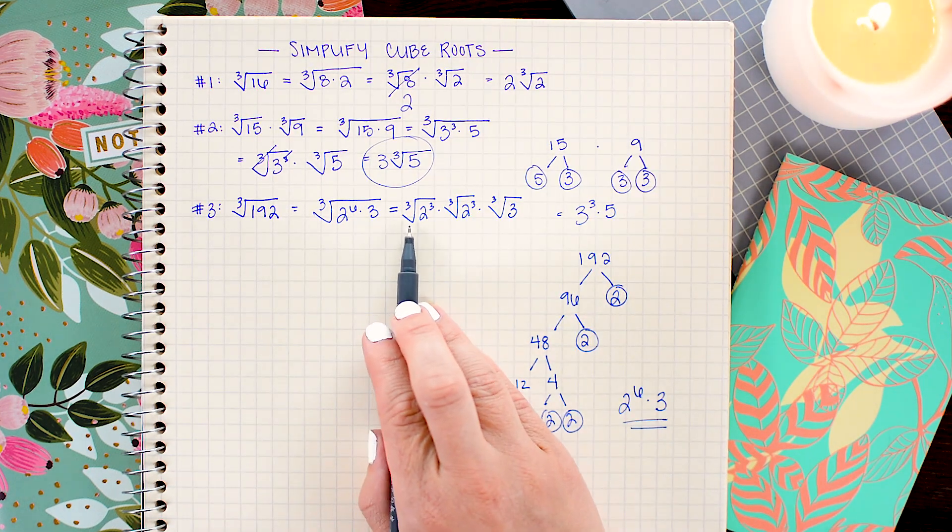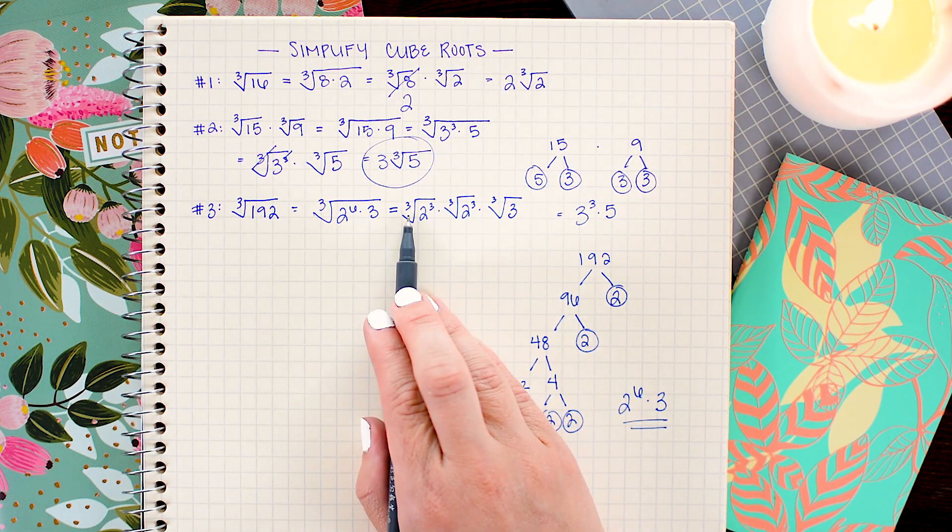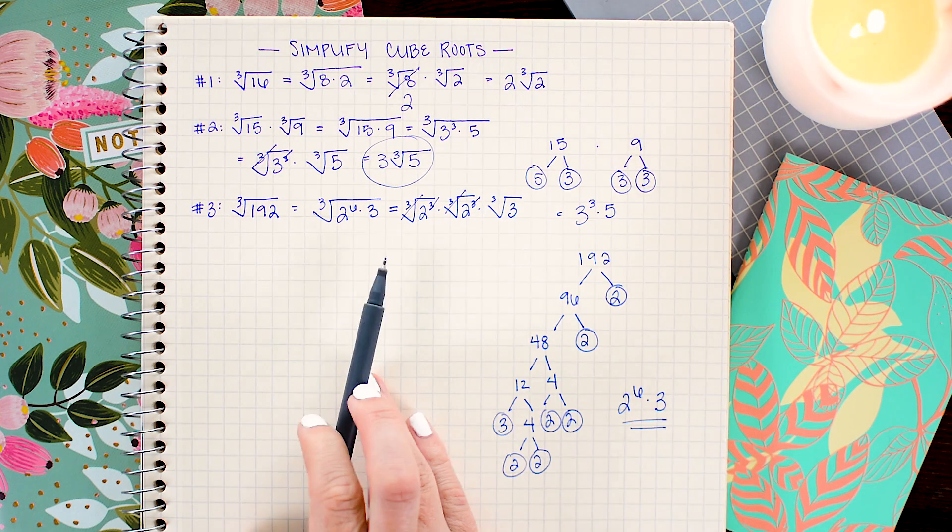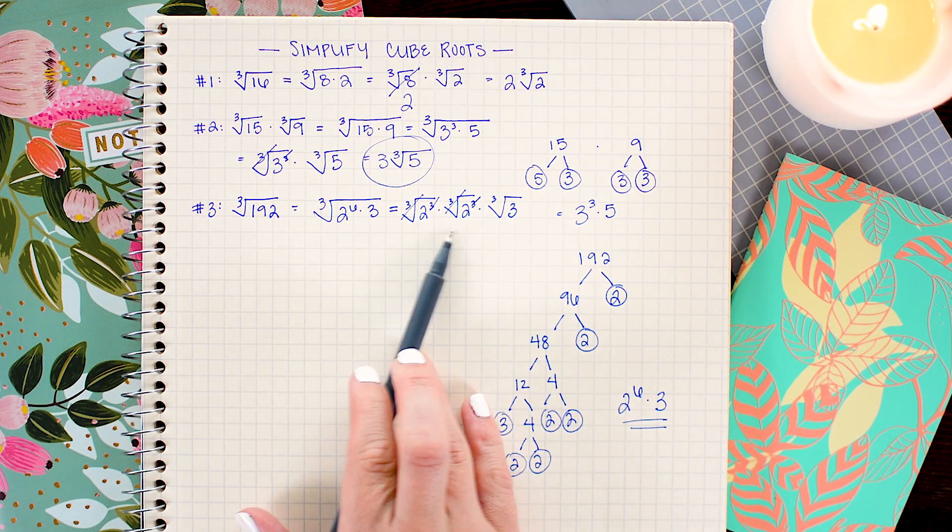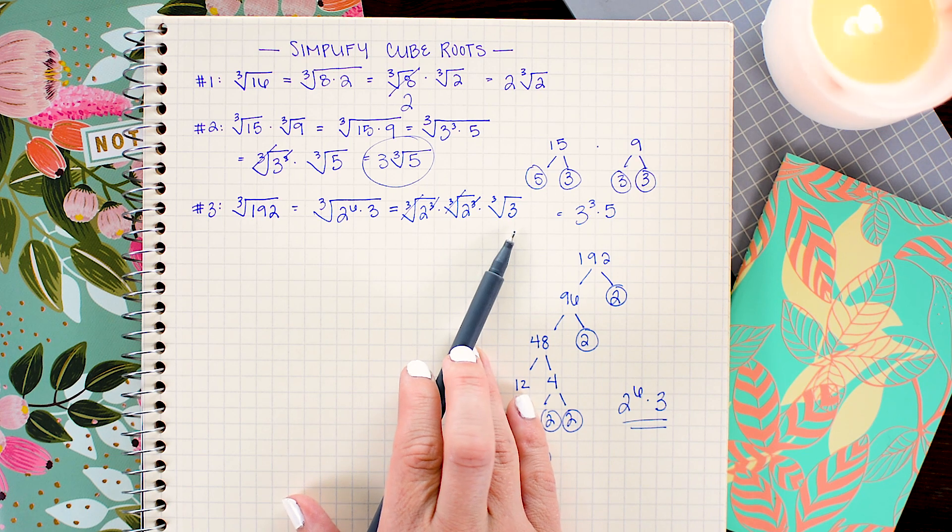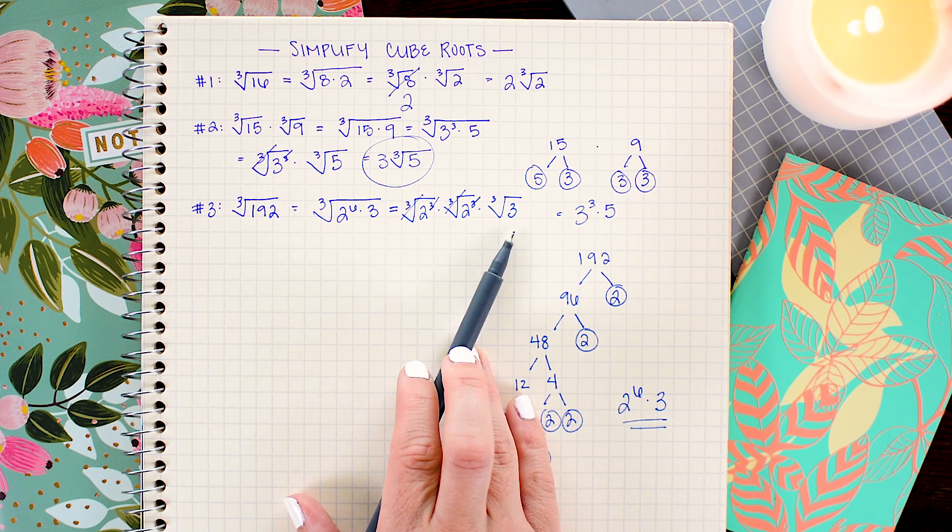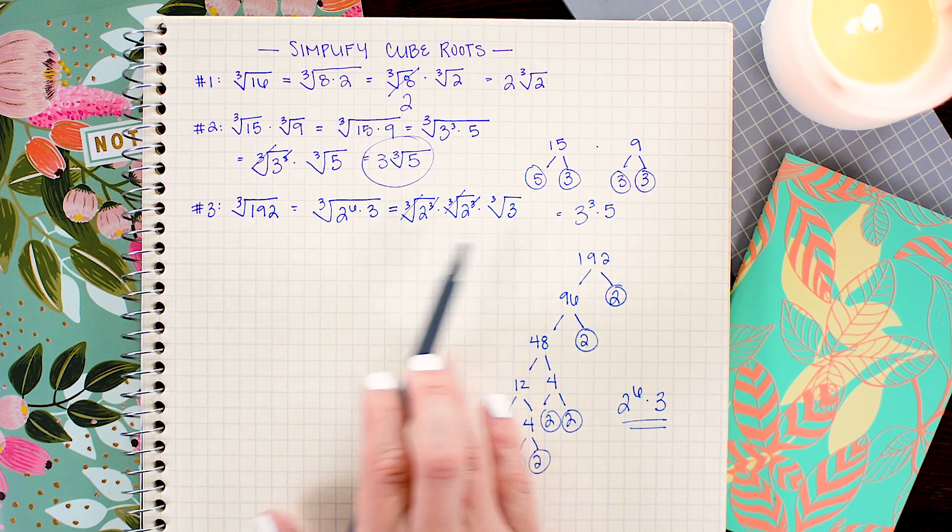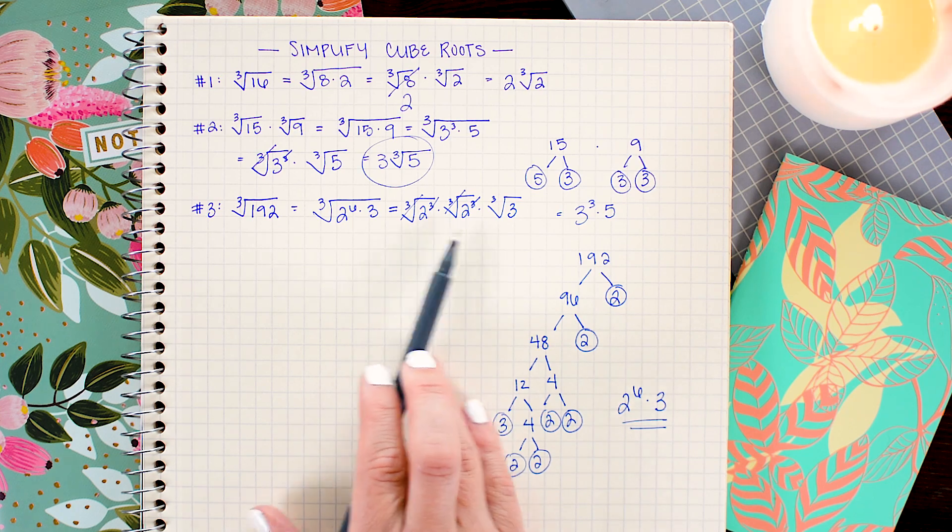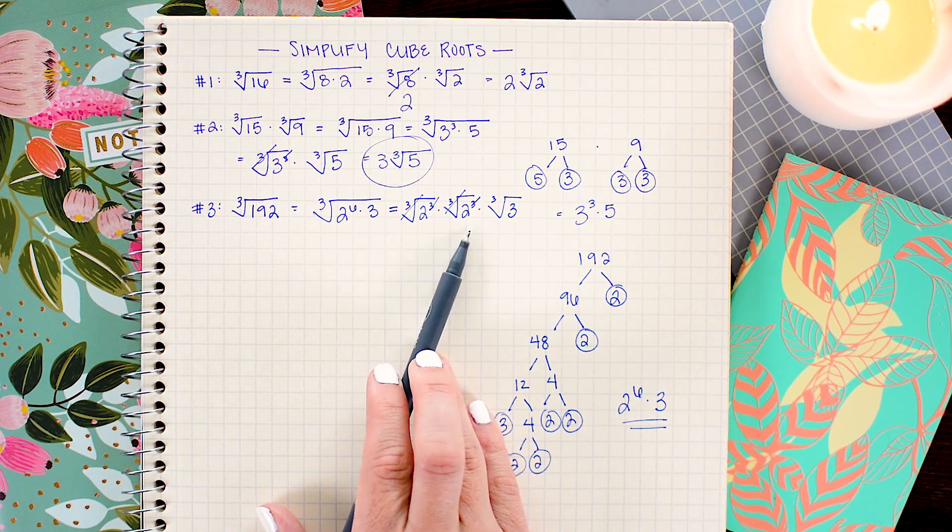Now I'm free to go ahead and cancel out the cubes with the cube roots. So that leaves me with 2 times 2 times the cube root of 3. And there's nothing else I can do to simplify. So all I need to do here is go ahead and find the product of 2 times 2 and write our answer.